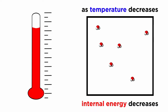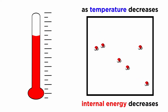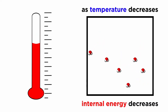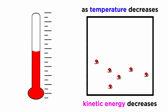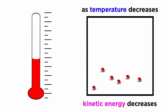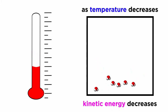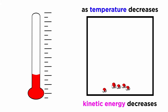The third law of thermodynamics states that the entropy of a system tends to zero as the temperature approaches absolute zero, or negative 273.15 degrees Celsius. This identifies that there is little to no relative motion of matter at absolute zero.